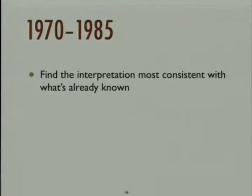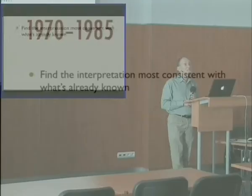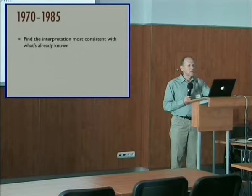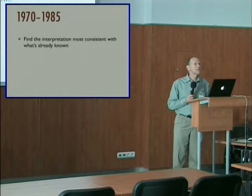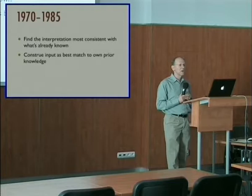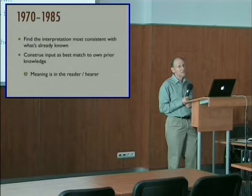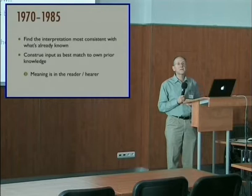The general idea underlying work in this period was that to resolve linguistic ambiguity and enthymemes, you had to find which of the many possible interpretations of the text was the most plausible — that is, the most consistent with what the system already knew. The input had to be construed in a way that matched the system's prior knowledge. And that, in turn, means these systems are using the third view of the locus of text-meaning — the most sophisticated and postmodern view: meaning is in the reader. The interpretation depends on what the individual system already knows.